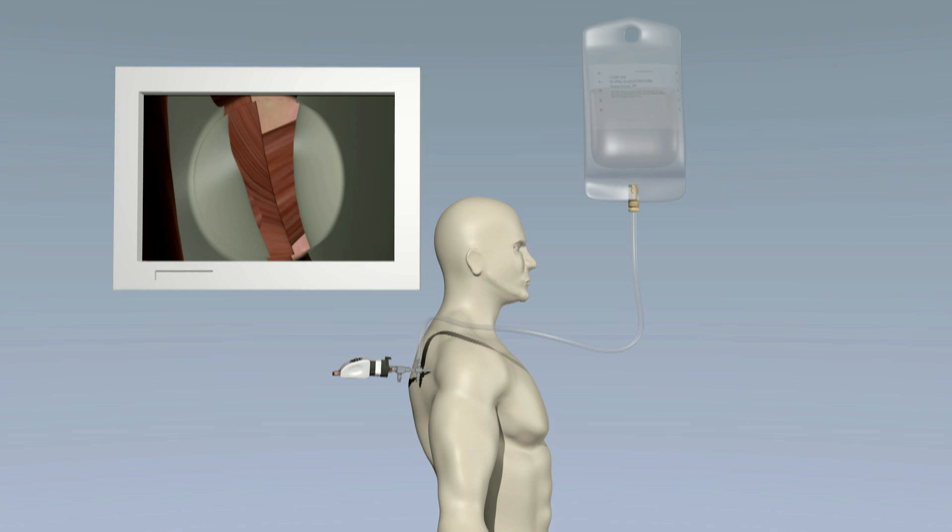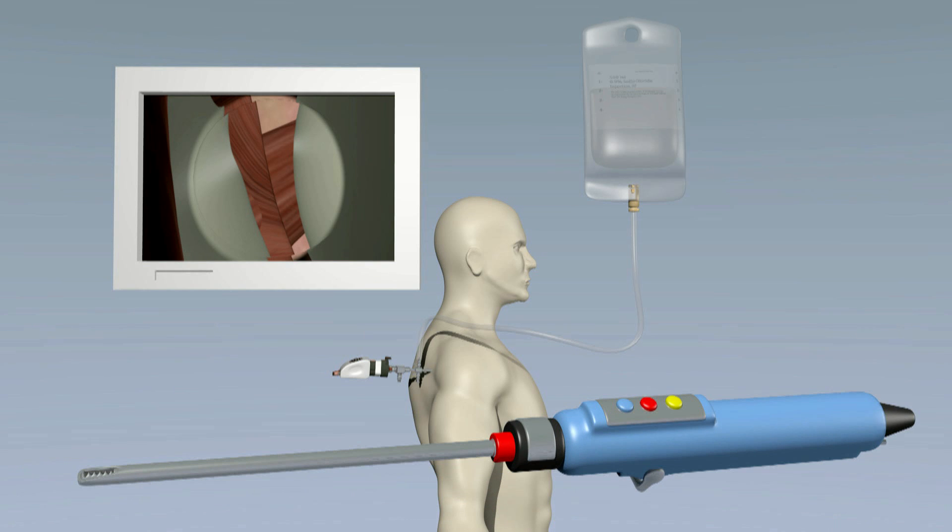One of the most commonly used instruments in shoulder arthroscopy is the electric shaver. A shaver has tiny rotating teeth that gently shave away unwanted cartilage and joint tissue.